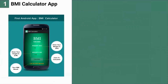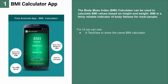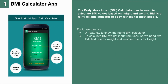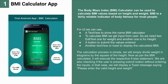The first app is the Body Mass Index BMI Calculator app. It can be used to calculate BMI values based on height and weight. BMI is a fairly reliable indicator of body fatness for most people. For UI, we can use a text view to show the name BMI Calculator. To calculate BMI, we get input from the user, so we need two edit texts — one for weight and another for height — a button to submit the values, and another text view or toast to display the calculated BMI. The calculation is simple: divide weight in kilograms by the square of the height.